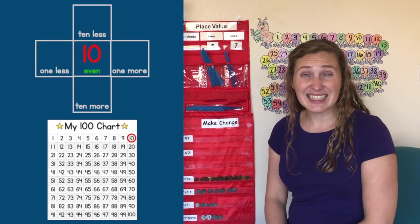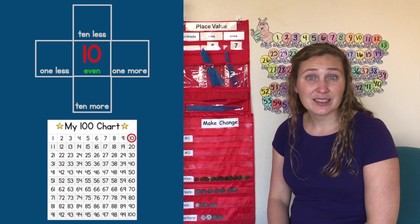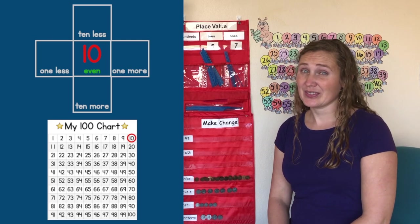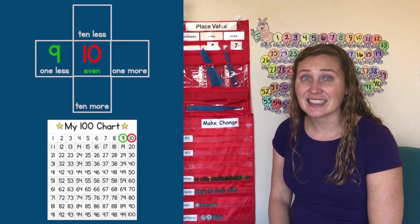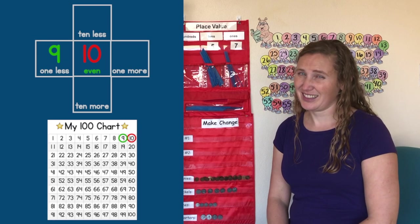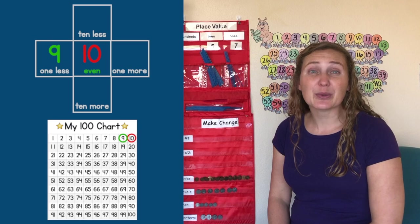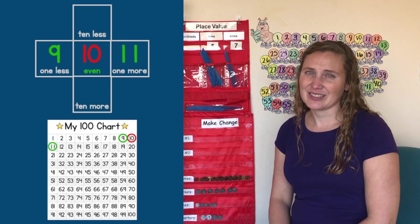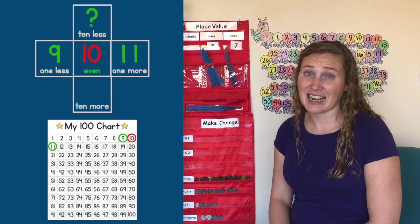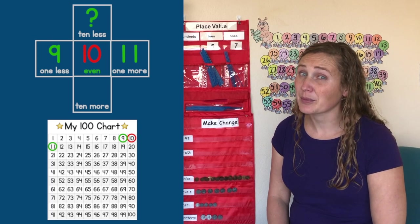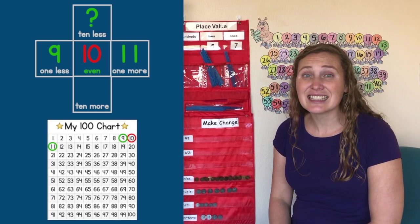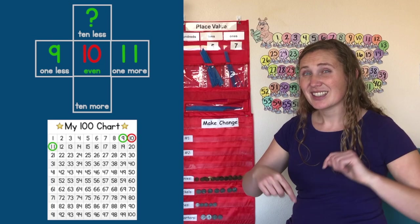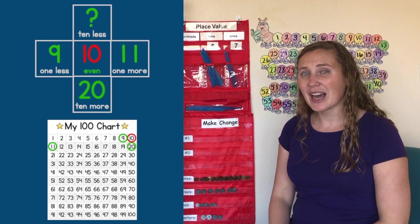What's 1 less than 10? That's 10 minus 1. 1 less than 10 is the number right before 10 on the 100s chart. The number right before 10 is 9. What's 1 more than 10? That's 10 plus 1. That's the number right after 10 on the 100s chart. 1 more than 10 is 11. We don't have 10 less than 10 on our 100s chart, but we do have 10 more than 10. 10 more than 10 is 10 plus 10. 10 more is the number right below. That's 20. Great job with the 100s chart today.